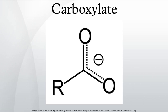A carboxylate ion is the conjugate base of a carboxylic acid. It is an ion with a negative charge. Carboxylic acids easily dissociate into a carboxylate anion and a positively charged hydrogen ion, much more readily than alcohols do, because the carboxylate ion is stabilized by resonance.